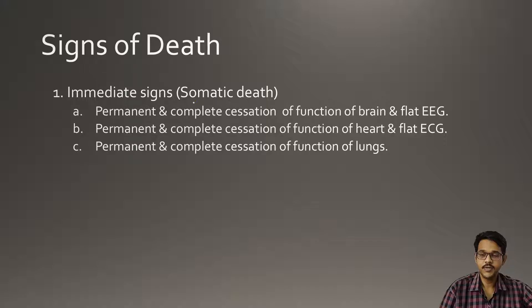Signs of death include immediate signs. First is permanent and complete cessation of functions of the brain. Next is permanent and complete cessation of functions of the heart. Then permanent and complete cessation of functions of the lungs. Those are the immediate signs.